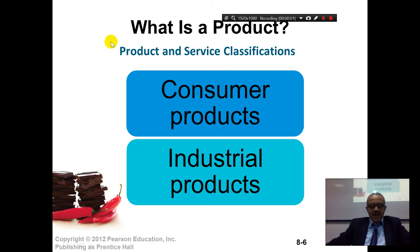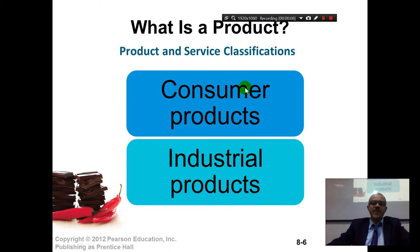So what is a product? We've got product and service classifications. There are some consumer products and industrial products. Consumer products are those that you and I will buy. For example, if you buy a shampoo and use it for your own personal use, that would be a consumer product.